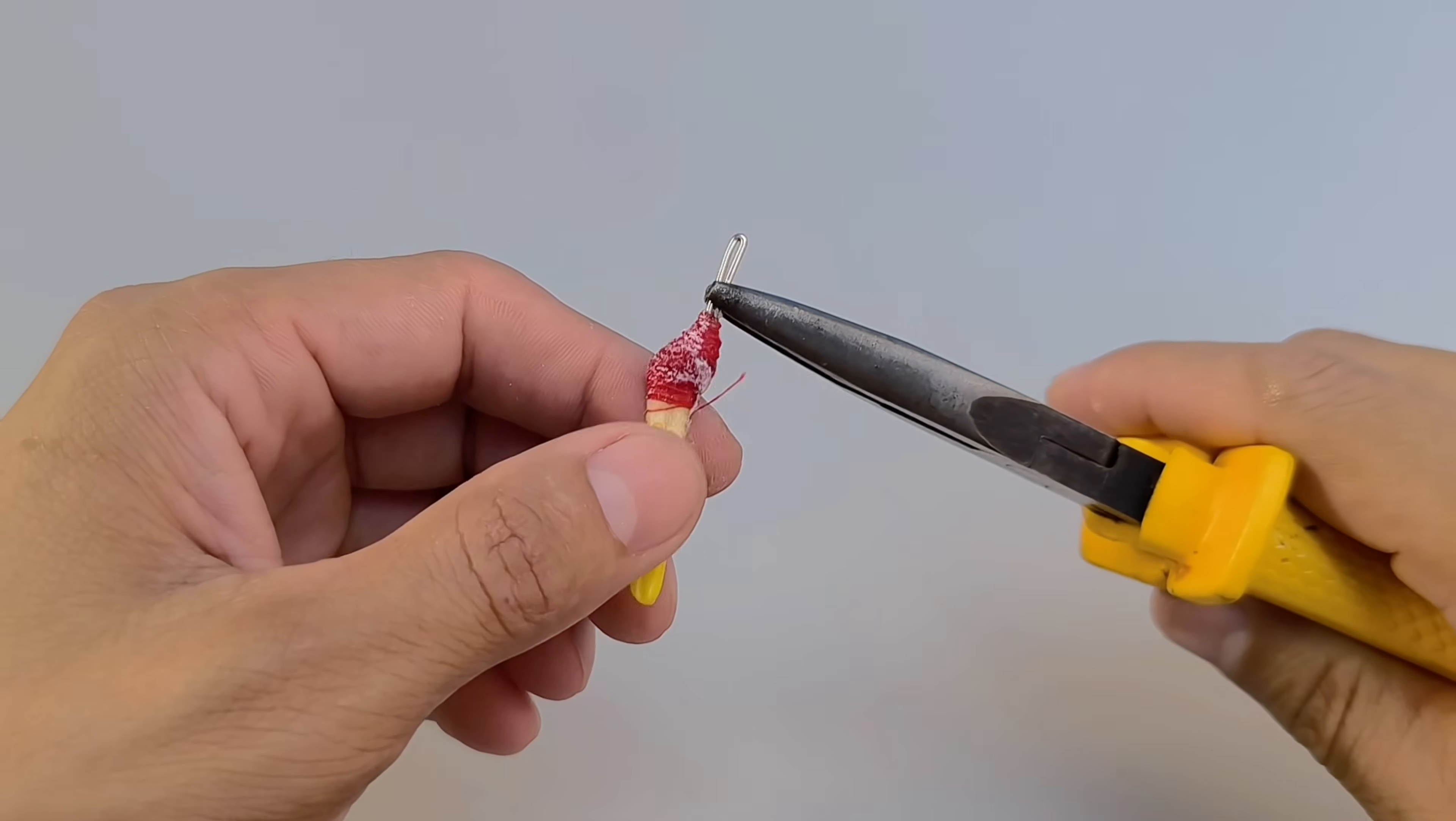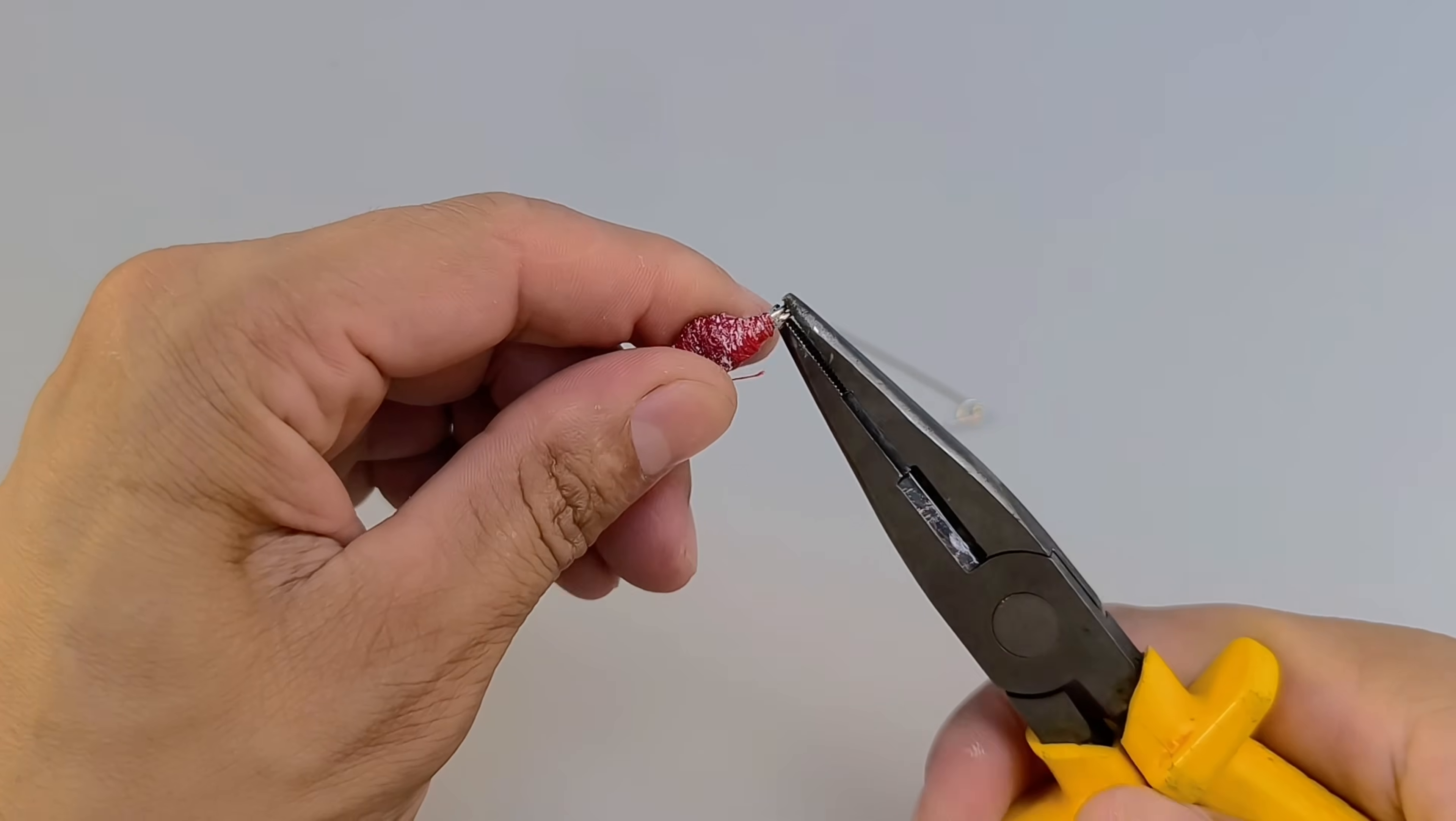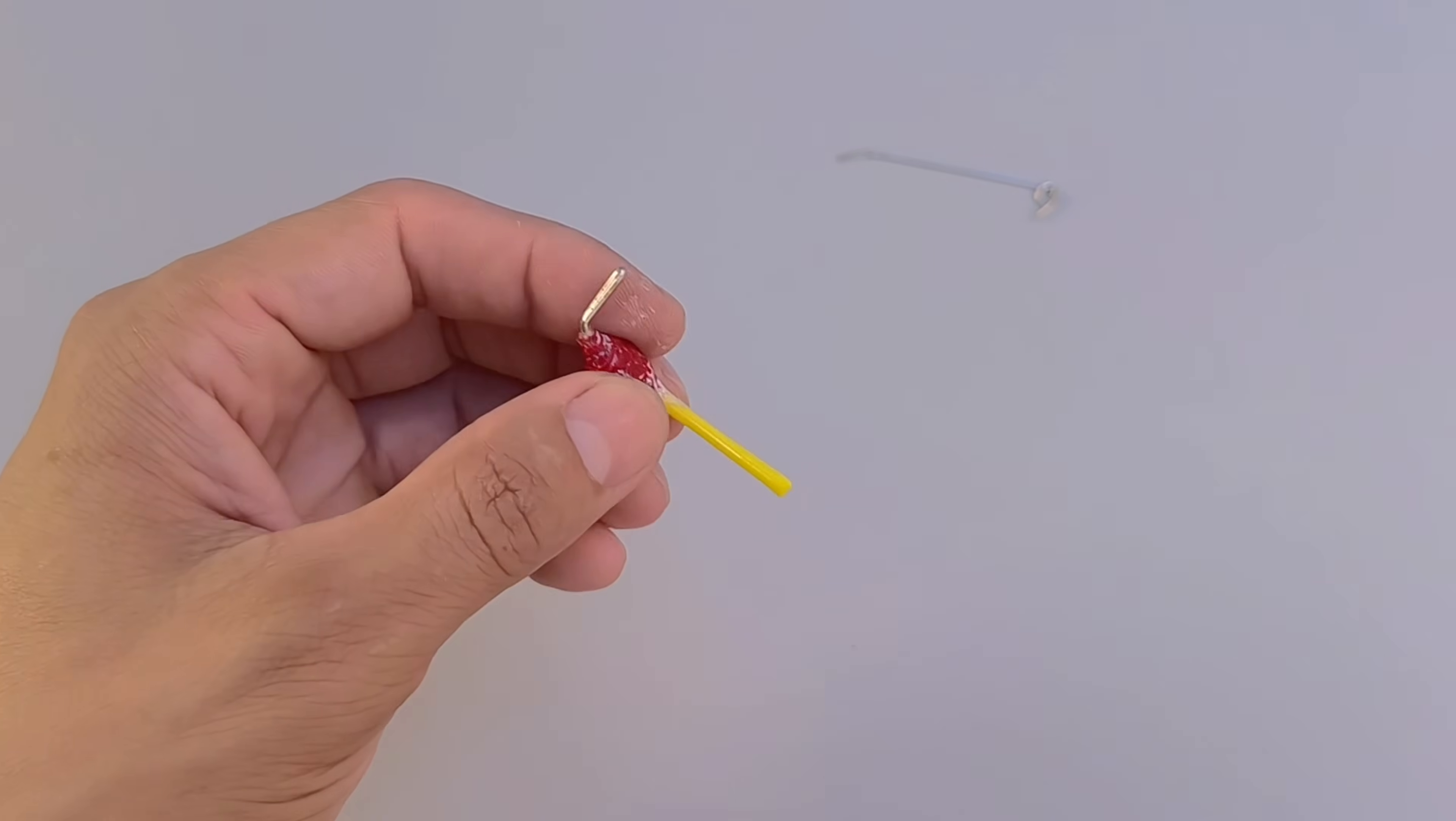Take the pliers again and make an L shape on the other end of the wire that was inserted into the cotton swab. This small bend is very important, as it will serve as leverage during the process of unlocking the lock.